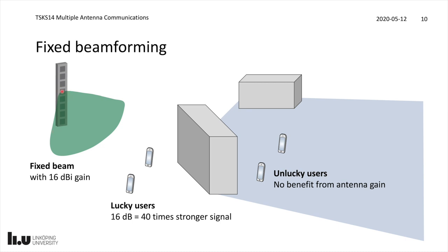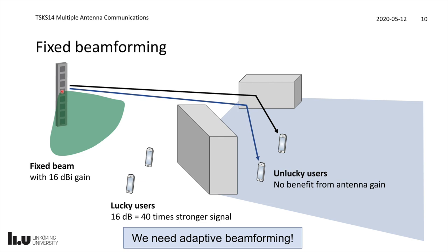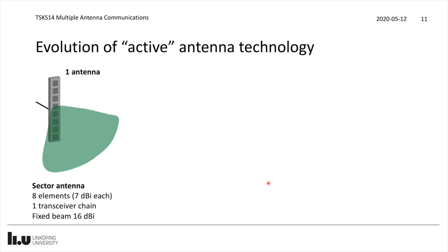To deal with that, we would like to have adaptive beamforming, which is what multiple antenna communication is about. We can steer the beam towards, for example, a signal bouncing off an object to reach unlucky users. Wherever users are in the coverage area, we would like to be able to steer the beams towards their locations. There has been a large evolution of this type of antenna technology, sometimes called active antennas, because they are not fixed — they are active and we can change their behavior.